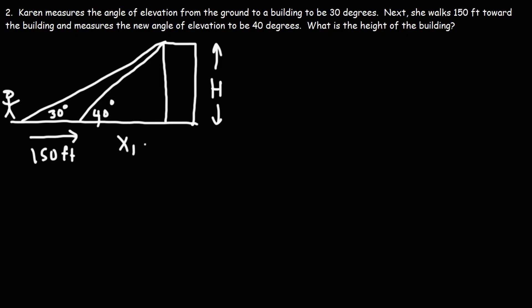Let's call this distance x1 and let's call the total distance x2. So what this means is that x2 is the sum of x1 plus 150.